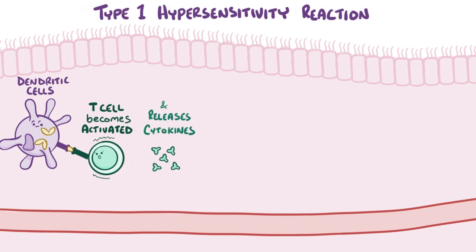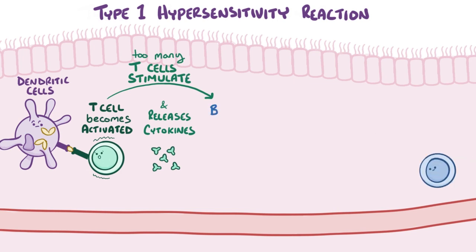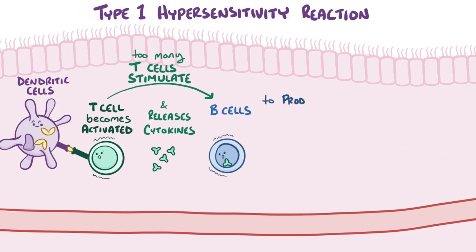The exact type of T cell determines the type of immune response, and in allergic rhinitis there's a bit of a T cell imbalance. There are too many T cells that, when activated, stimulate B cells — another group of lymphocytes — to produce IgE antibodies.